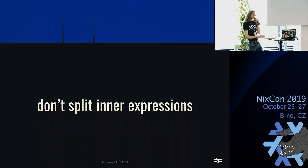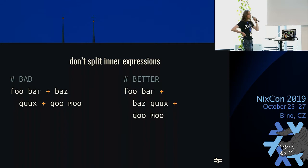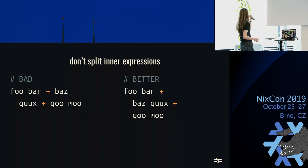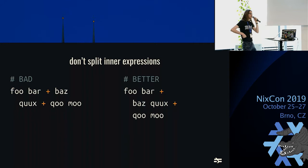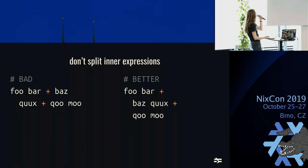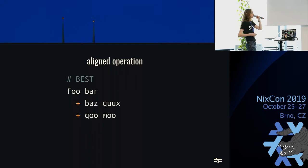In Nix expressions, the pretty-printing library originally used — which is used mostly in Haskell — does the bad version: it really wants to fit as much as possible in a small space, and it will actually split the inner expression rather than splitting on logical parts. I prefer splitting on logical parts, which is why I had to change the pretty-printing algorithm from the standard Haskell one.